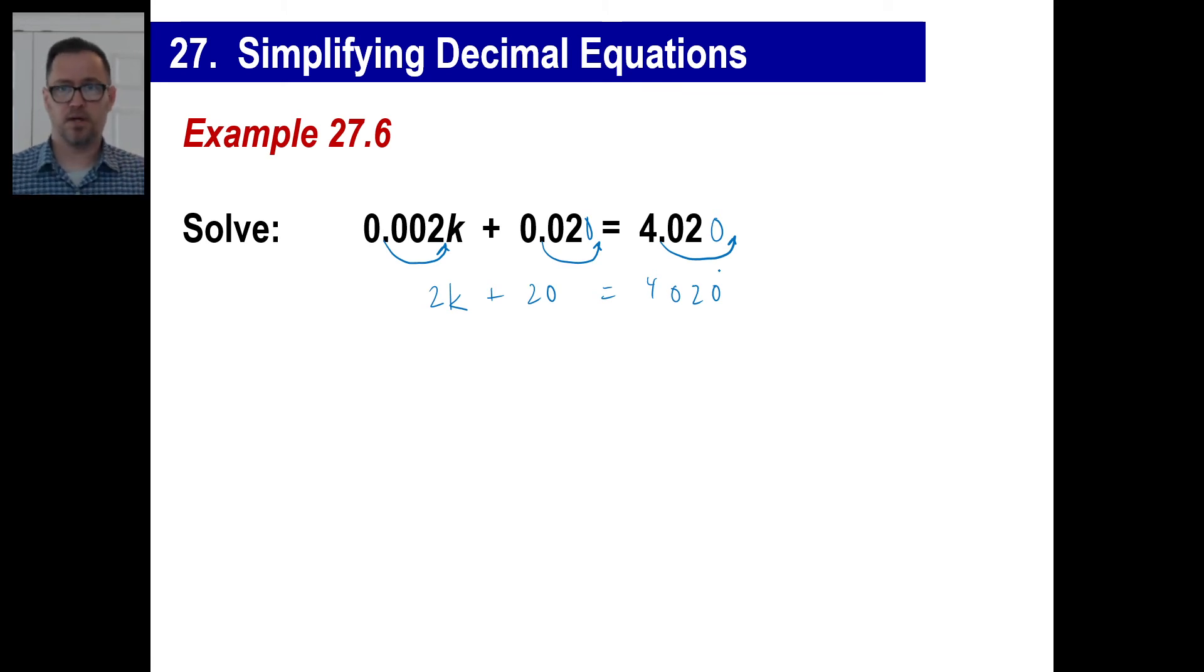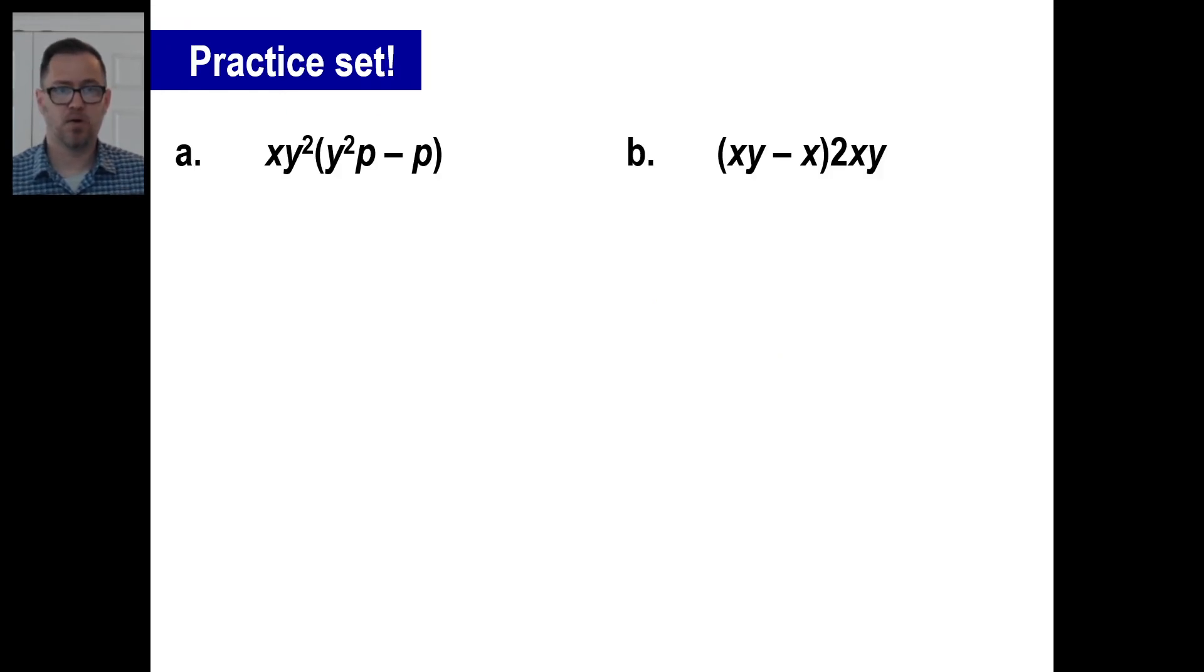Well, you can do this one, right? What's the first step we need to do here? Subtract the 20. So we're going to subtract the 20. 2k is left. 4,000 is over here. And then the last thing we do is we divide by two. And everybody knows what 4,000 divided by two is. And there you go. Dollars to piece of k.